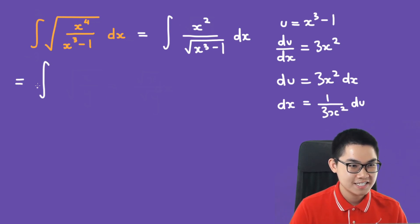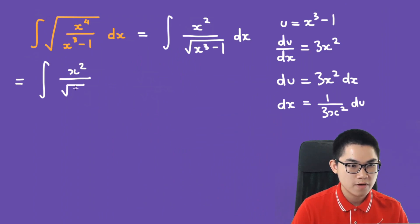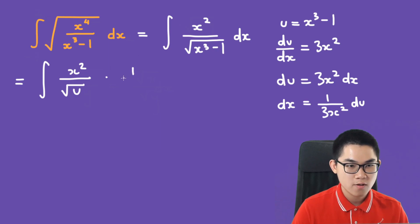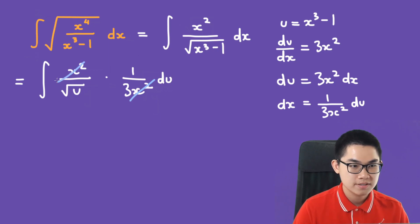This gives us x squared divided by the square root of u, multiplied by dx which is 1 over 3x squared du. The x squared terms cancel out.